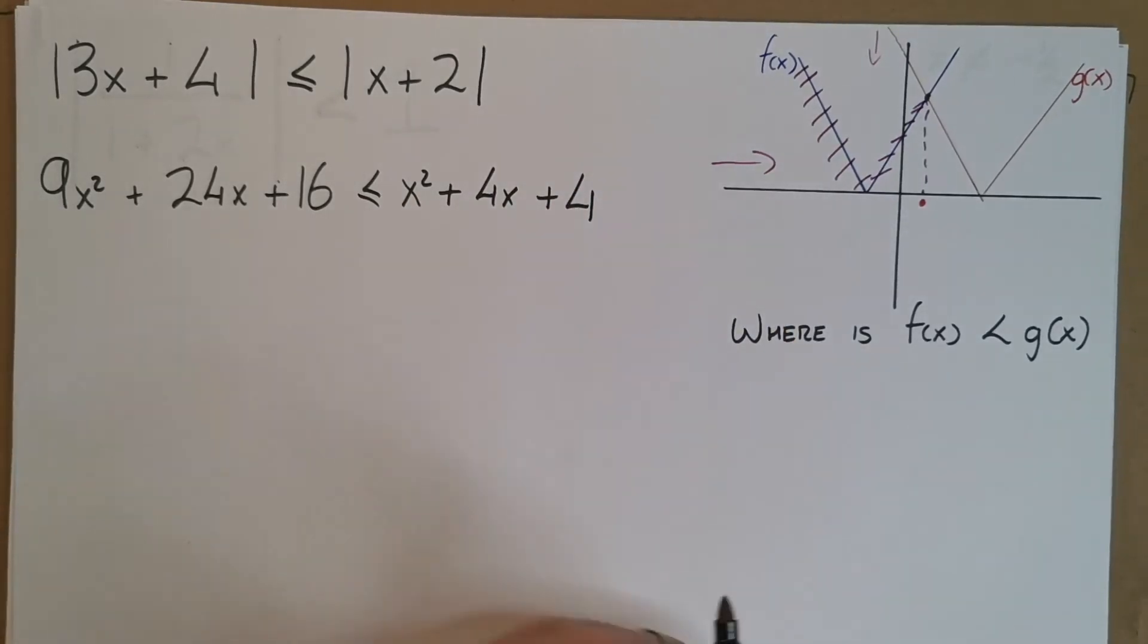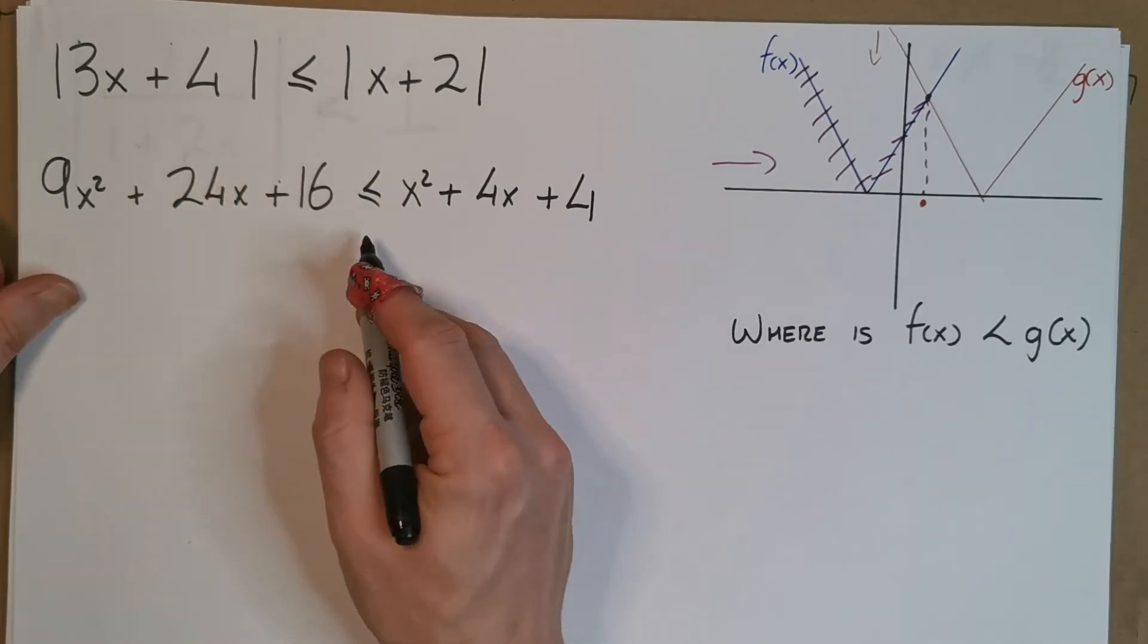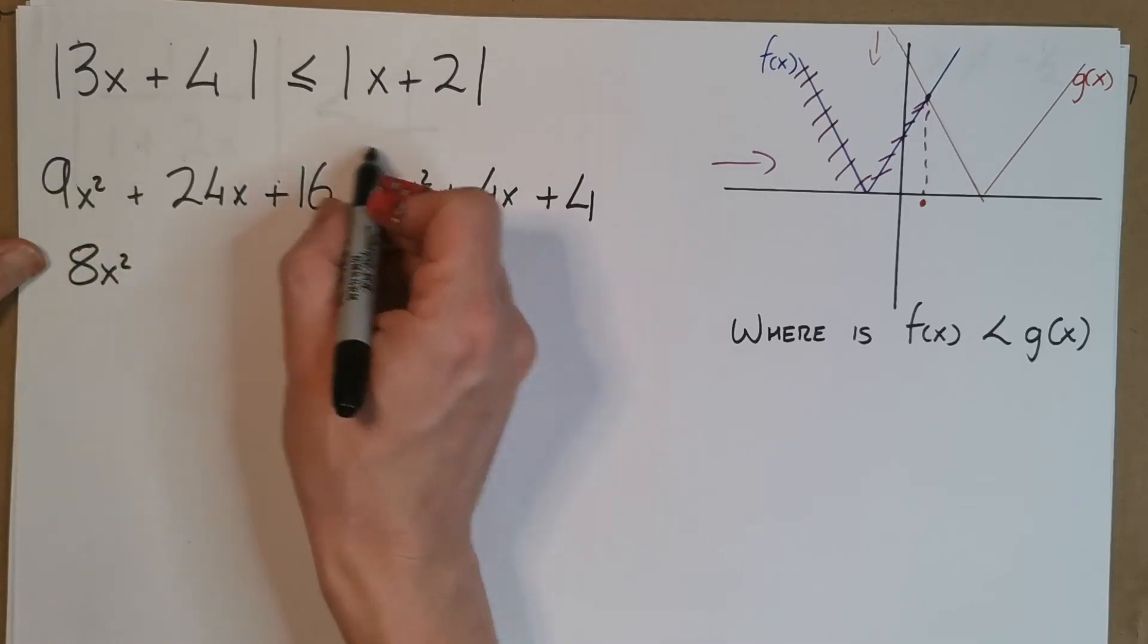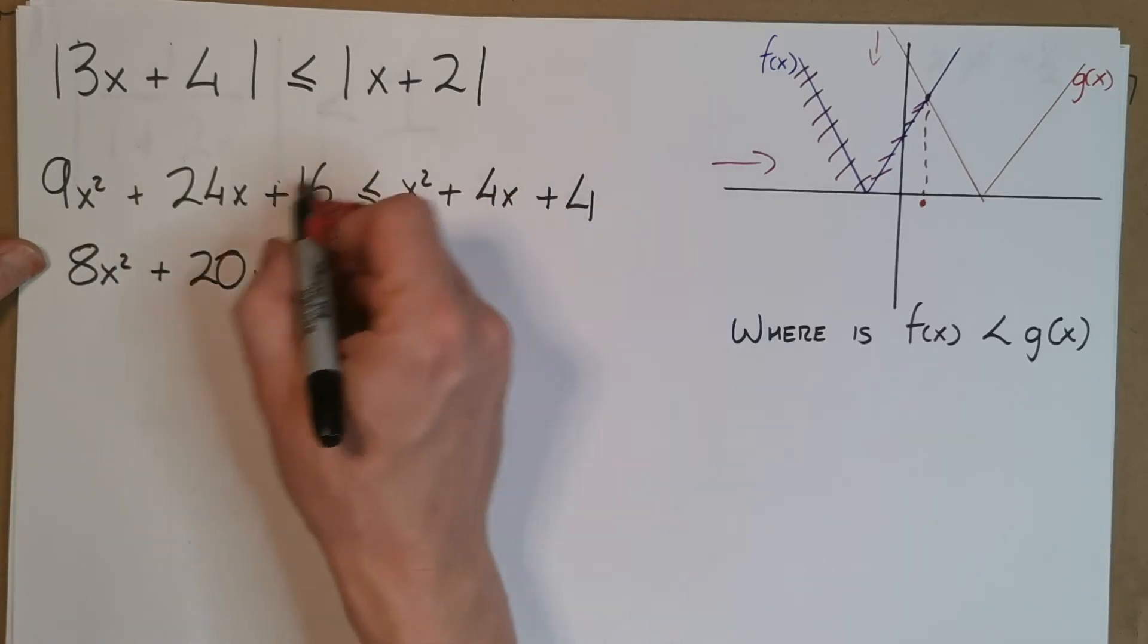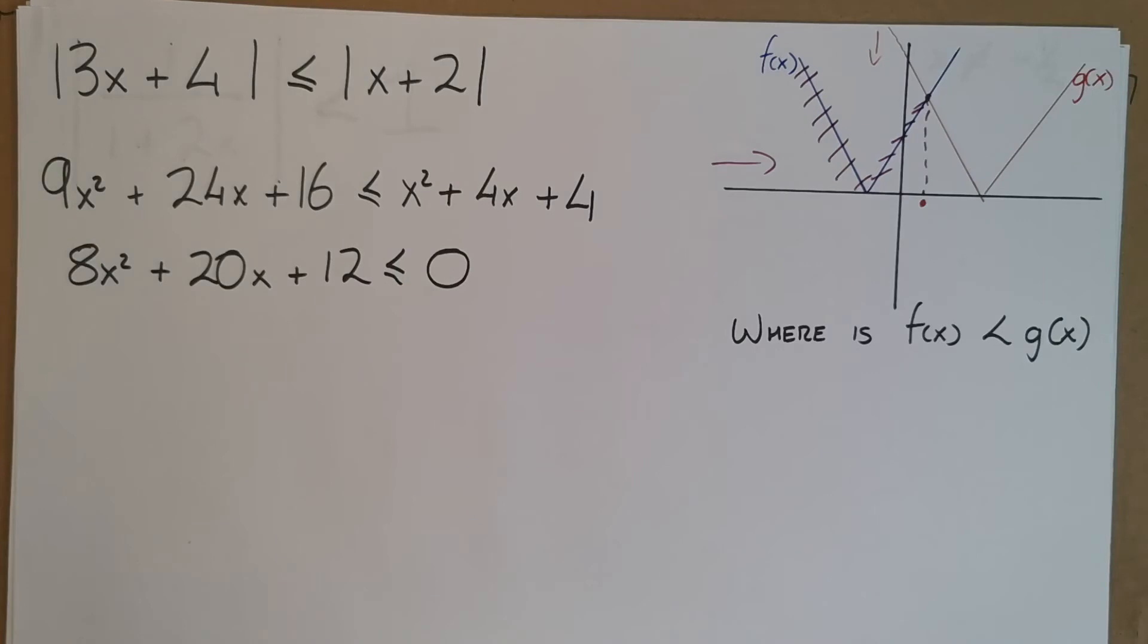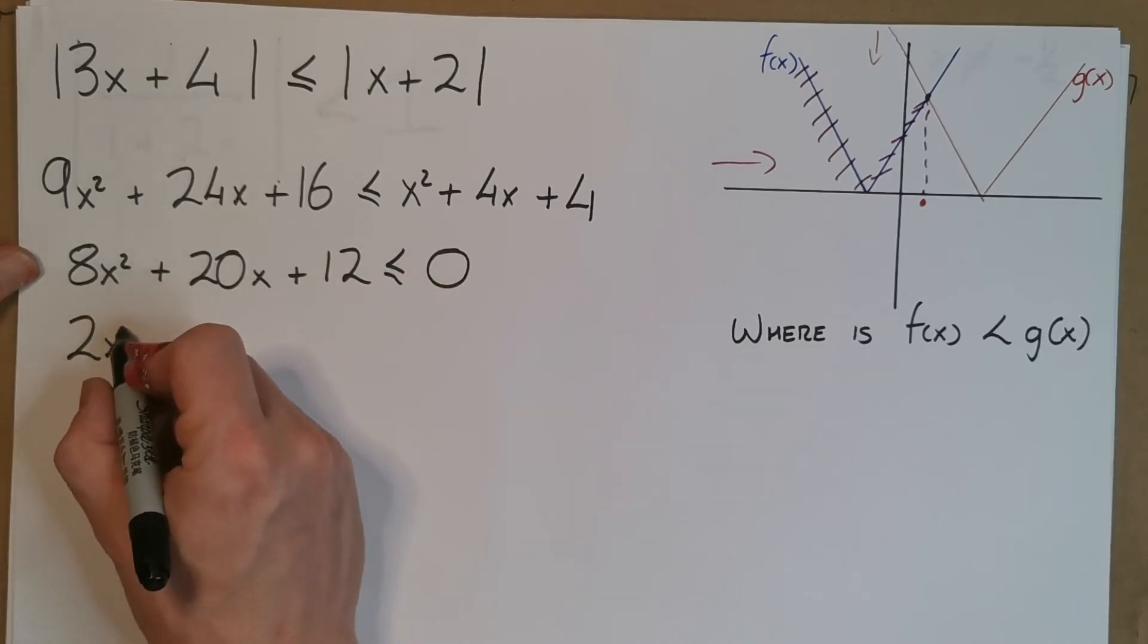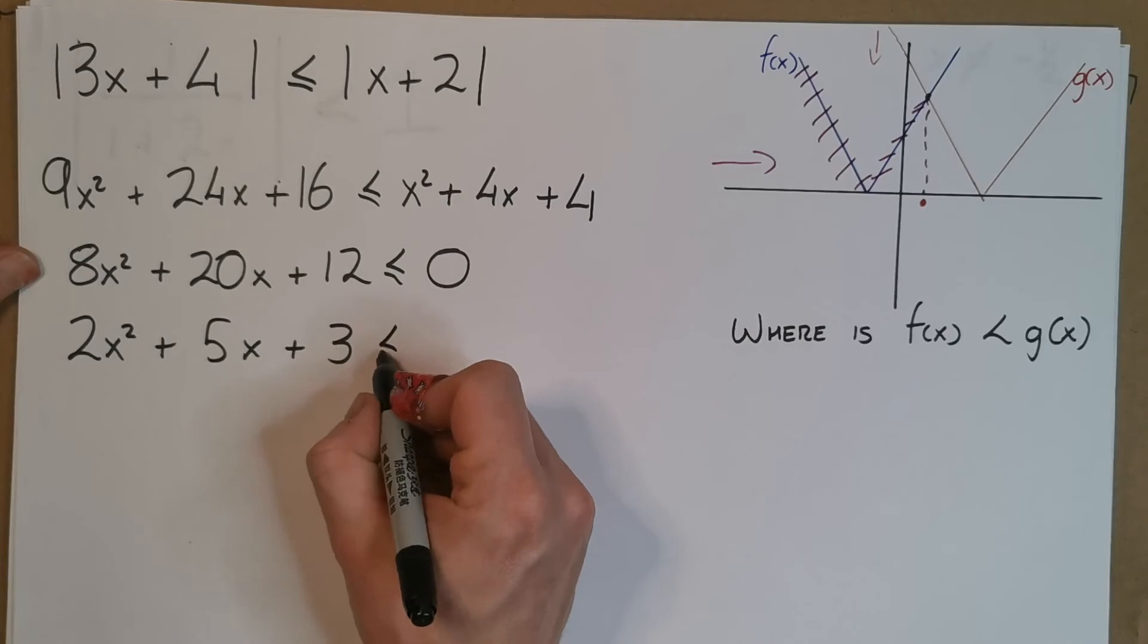Now I have a quadratic equation of some sort. I still have an inequality, but that's okay. We can move these things over. We're not multiplying or dividing by a negative, so it's not going to switch. We're just going to bring these terms over. So 9x² minus the x² gives us 8x², 24x minus 4x gives us 20x, and then 16 minus 4 gives us 12, less than or equal to 0. All these things seem to be divisible by 4. Divide by 4 gives us 2x² + 5x + 3 less than or equal to 0.